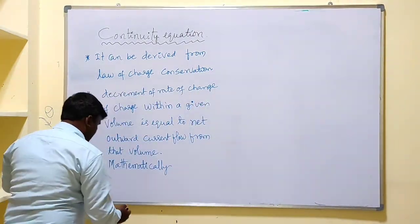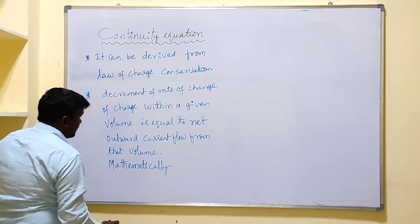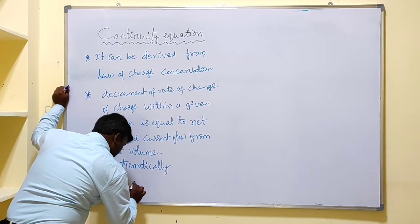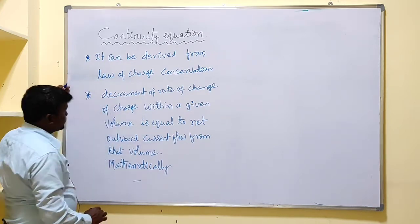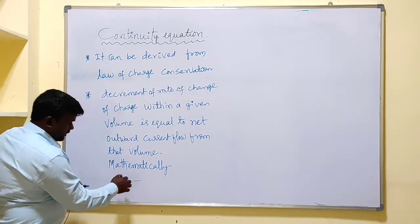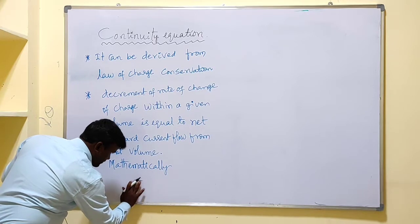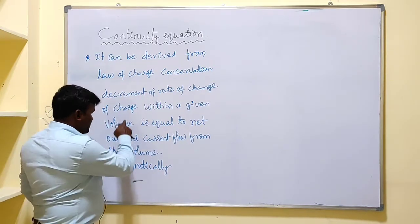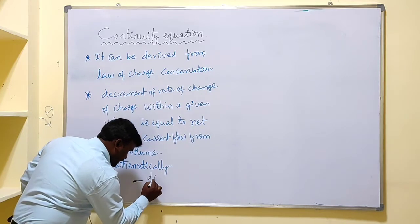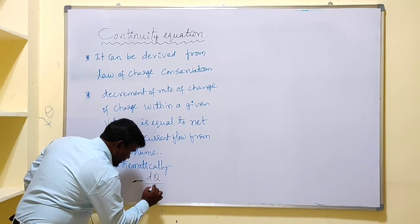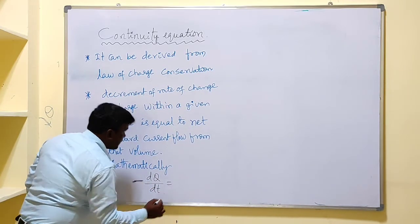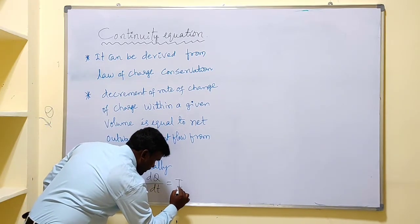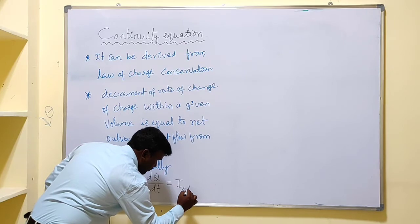Mathematically, the decrement is represented with a negative sign. So this negative sign indicates the decrement of rate of change of charge, written as -dQ/dt, which is equal to the net outward current flow, i_out, from the given volume.